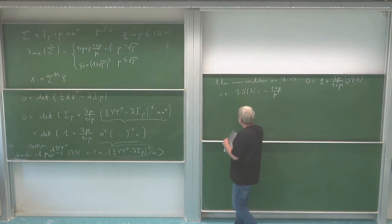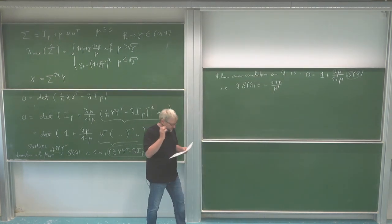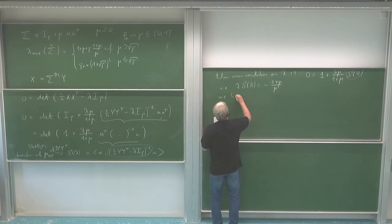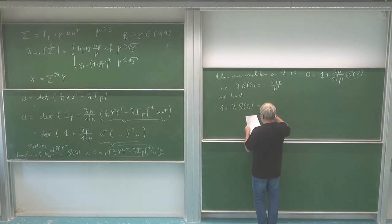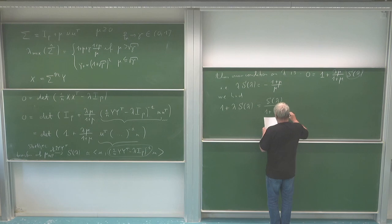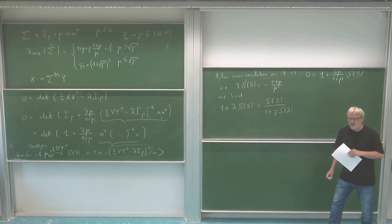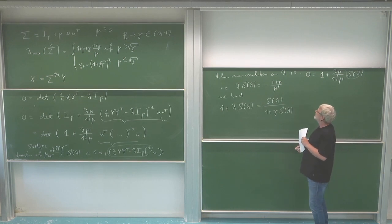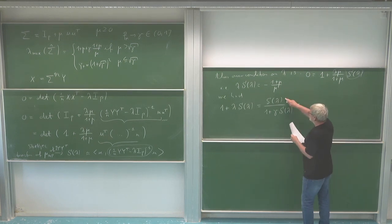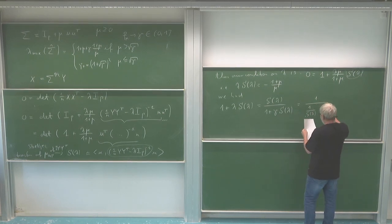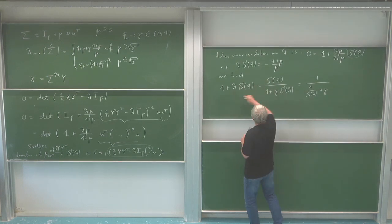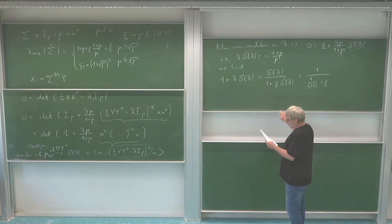The equation for the Stieltjes transform of Marchenko-Pastur was: 1 + λ·s(λ) = s(λ) / (1 + γ·s(λ)), or equivalently 1/s(λ) + γ = 1/(1 + λ·s(λ)). We can write this as a quadratic equation in s(λ): multiplying out gives 1 + γ·s(λ) + λ·s(λ) + γλ·s(λ)² = s(λ).